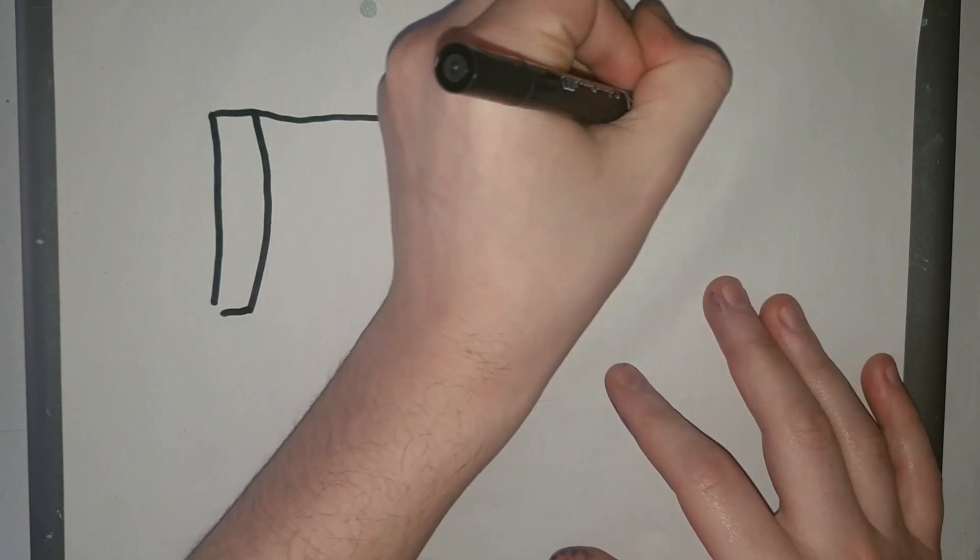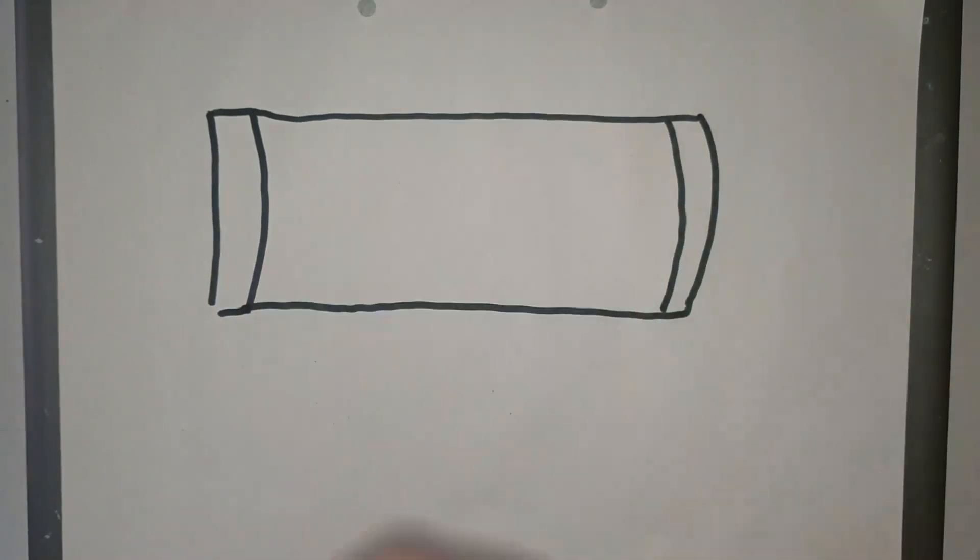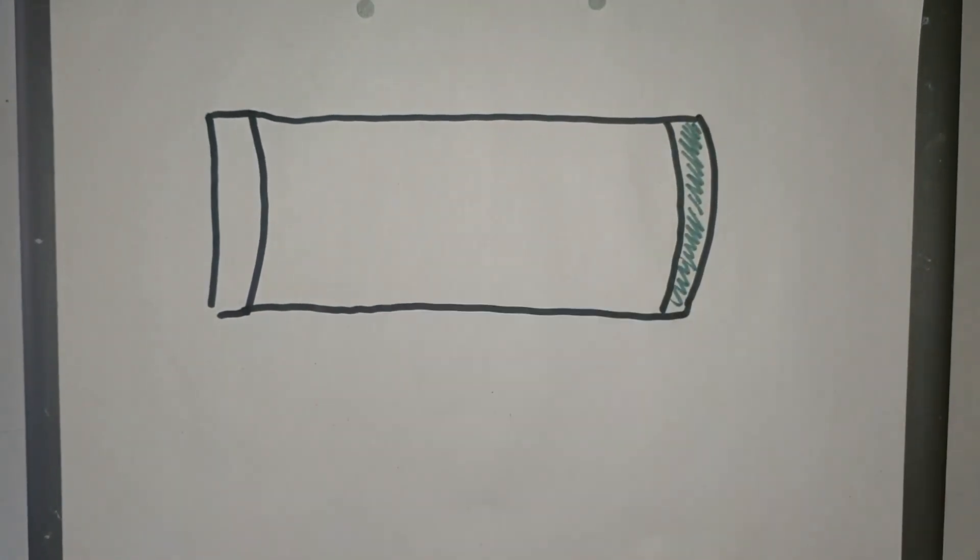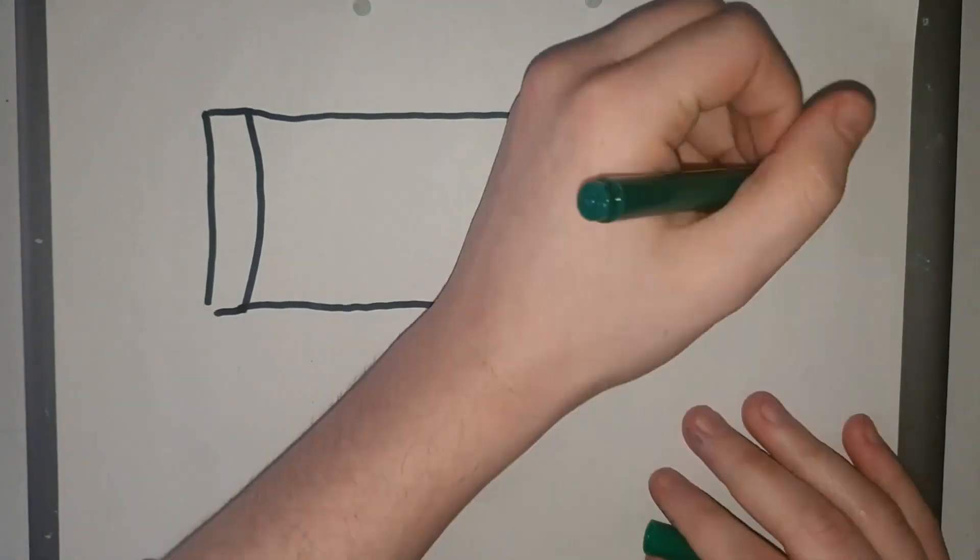So the Geiger-Müller tube is a metal tube. One end of it is covered with a special material and we call this side the window. This is where the radiation enters the tube.